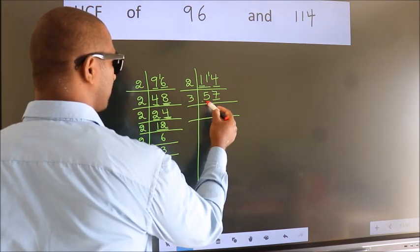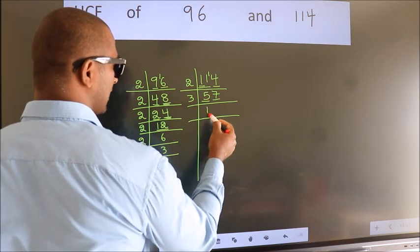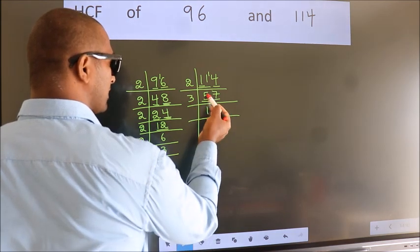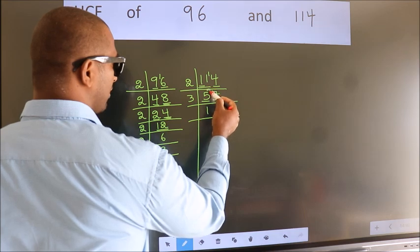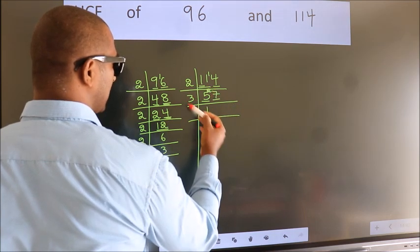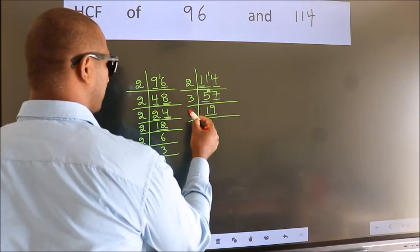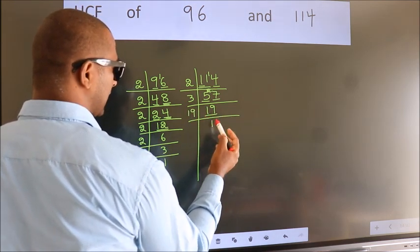First number 5. A number close to 5 in 3 table is 3 once 3. 5 minus 3 is 2. 2 carried forward 27. When do we get 27 in 3 table? 3 nines 27. 19 is a prime number, so 19 once 19.